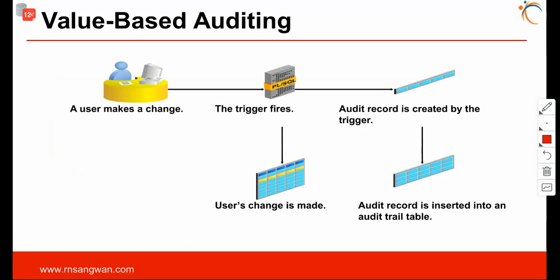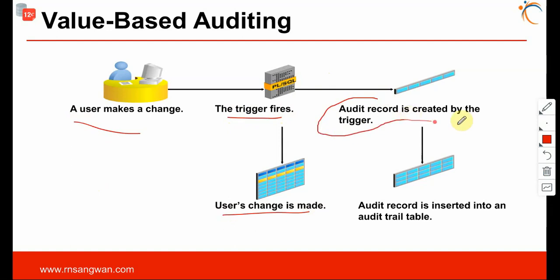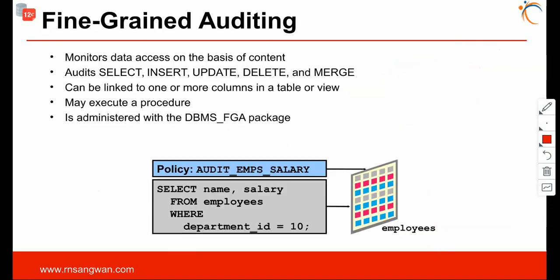We can also have value-based auditing. When a user makes a change, a trigger is fired, and at that moment an audit record is created by the trigger. Whatever changes were made by the user are recorded, and the audit record is inserted into the audit trail table.